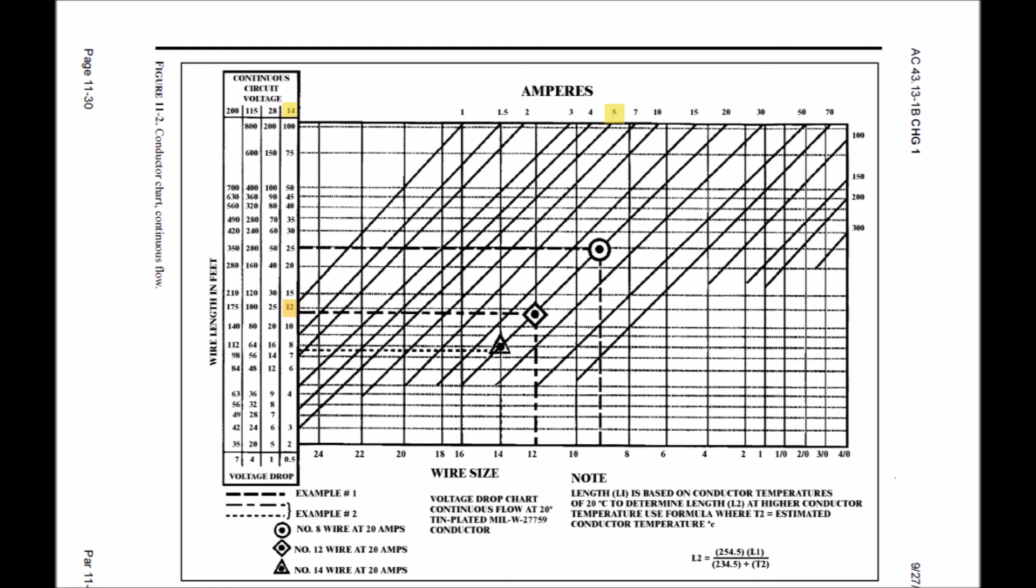Now what I'm going to do is trace a line down the 5-amp line and straight over from the 12-foot line. You'll see highlighted in red. At the point where they intersect, I'm going to draw a line from that point straight down. You'll see highlighted in green, and it comes down to the bottom of the chart where my wire size is shown.